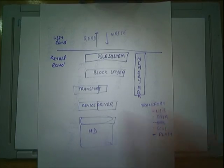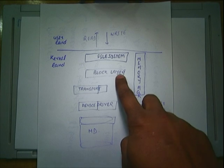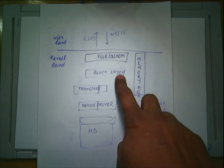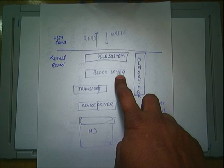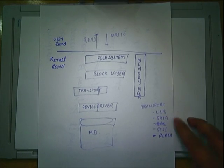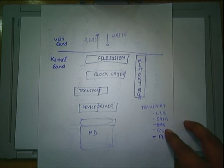So now you understand why we need device drivers. Up through the block layer, everything is generic — it doesn't understand anything about the underlying device. Whether it's a USB device, a SATA device, a SCSI device, a SAS disk, a NAND flash, or an SD card — the block layer doesn't care.